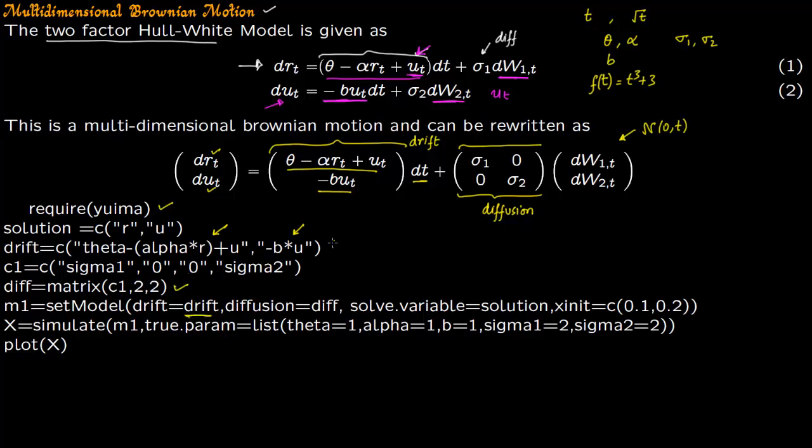And then you set the model. Drift as drift, this is our drift. Diffusion as this matrix. And then you solve for variable solution. Solution is r and u. We are going to initialize the values for r and u as 0.1 and 0.2.